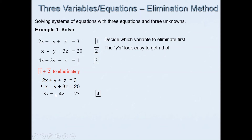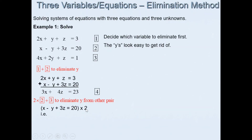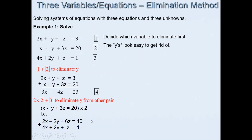We must eliminate y from a second pair of equations. Equation 3 has a y coefficient of 2, so we multiply equation 2 by 2 to get 2x − 2y + 6z = 40. We then add this to equation 3 — adding because the signs of the y coefficients are opposite — and 2y + (−2y) cancels. This gives us 6x + 7z = 41, which becomes equation 5.